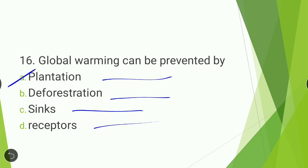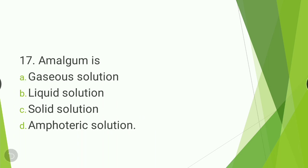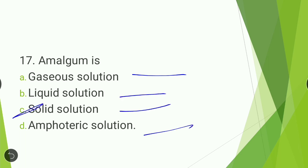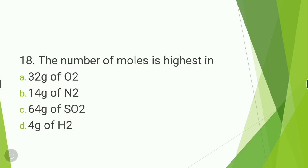Next question: global warming can be prevented by — plantation, deforestation, sinks, or receptors? The answer is option A, plantation. Global warming can be prevented by plantation. Next question: amalgam is a — gaseous solution, liquid solution, solid solution, or amphoteric solution? Amalgam is a solid solution.